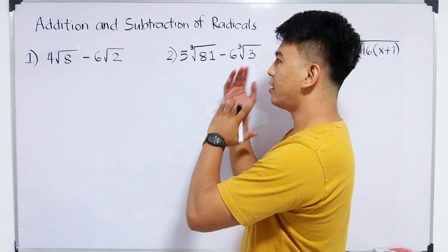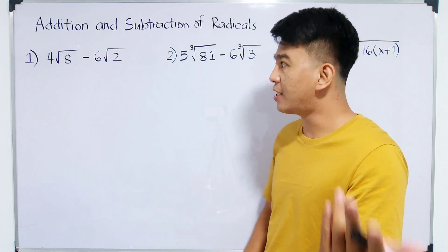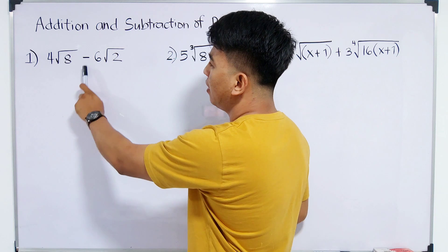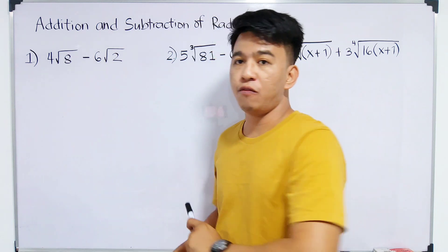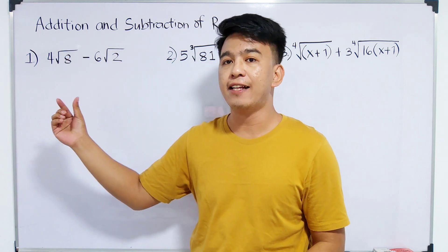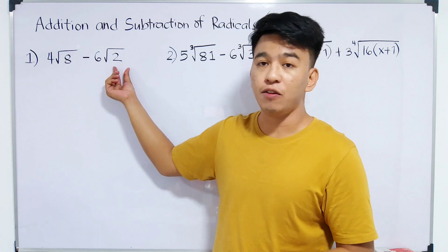So the focus of this is to add or subtract radicals with different radicands. And for example, number 1, we are given 4 times the square root of 8 minus 6 times the square root of 2. As you can see, in our first radical, the radicand is 8, while in the second radical, we have the radicand of 2.